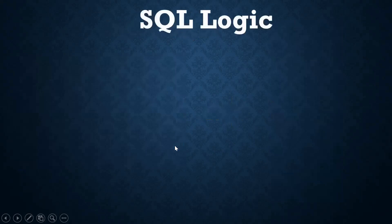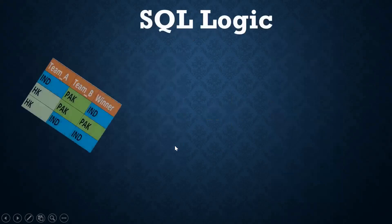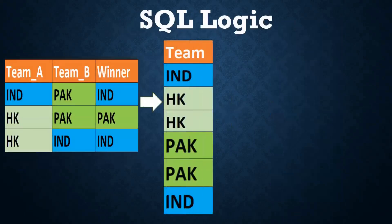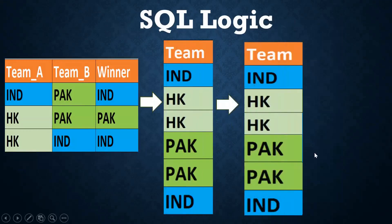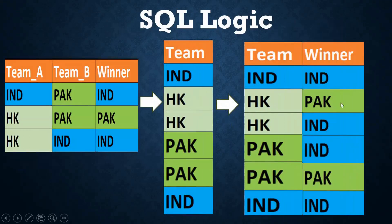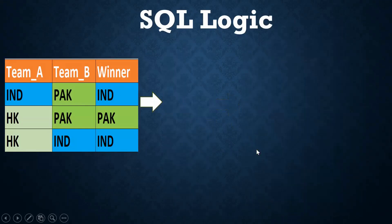In a similar fashion, I am putting the winner column. Who is the winner? India, Pakistan, India — India, Pakistan. The first step is to get the number of matches. Next, in a similar fashion, I am also taking the winners. India, Pakistan.